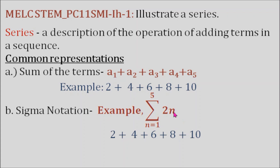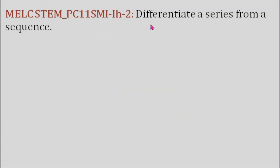If we substitute n with 2, that's 2 times 2, equal to 4. Then if n equals 3, that's 2 times 3, that's 6. And if n equals 4, that's 2 times 4 is 8. If n is 5, 2 times 5 is 10. So this sigma notation is actually equal to 2 plus 4 plus 6 plus 8 plus 10.